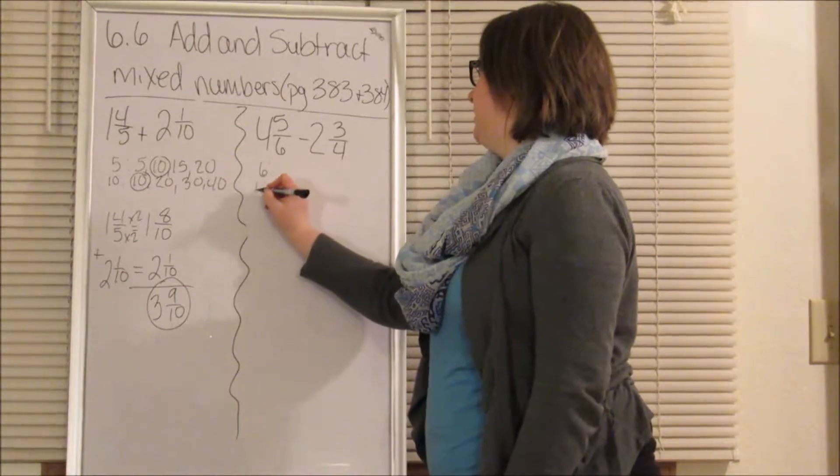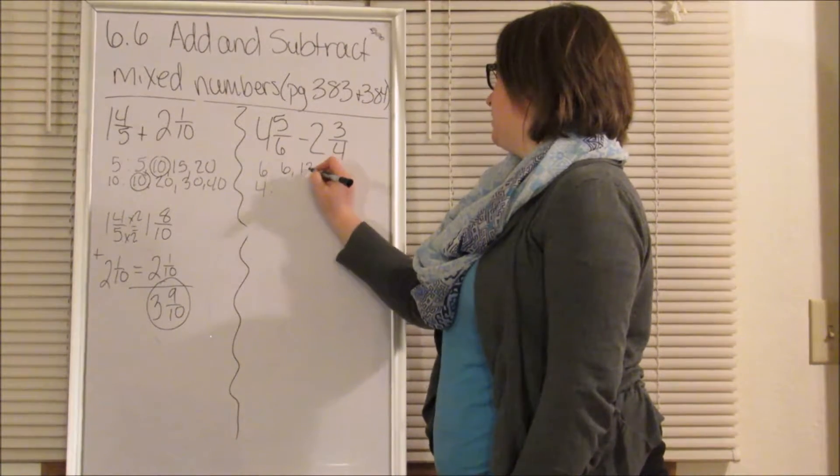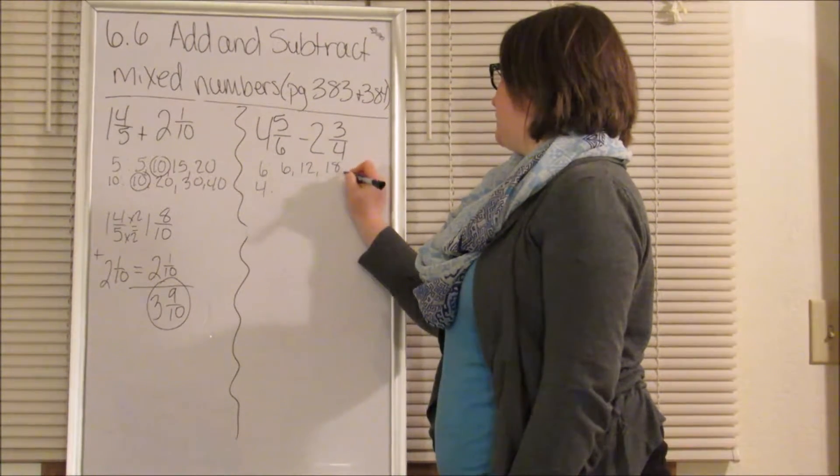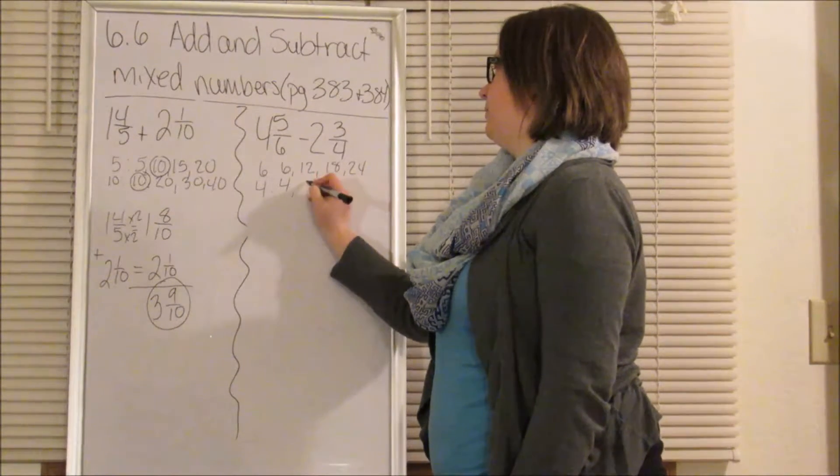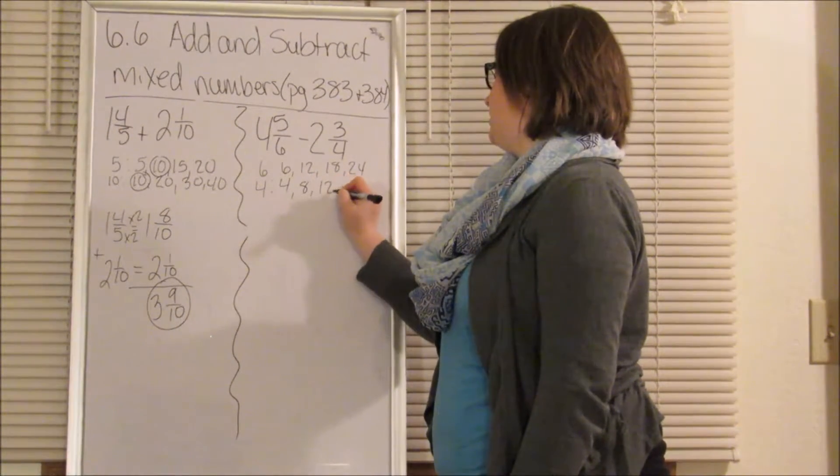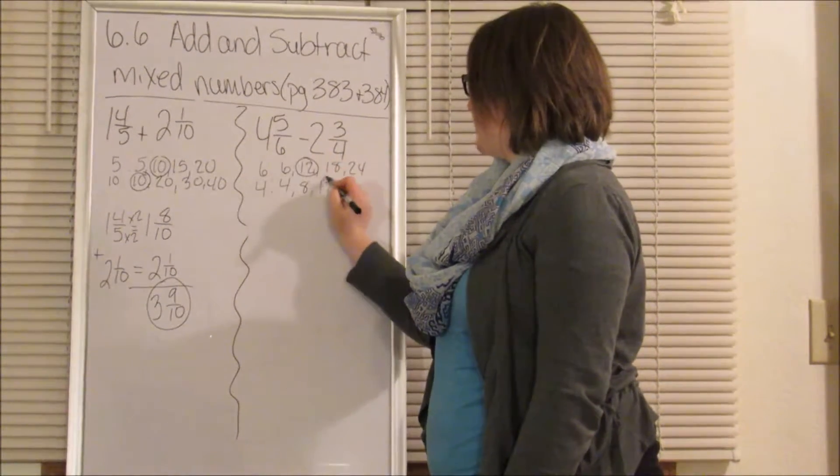So we have 6, and we have 4. 6, 12, 18, 24. 4, 8, 12, 16. So our least common denominator is going to be 12.